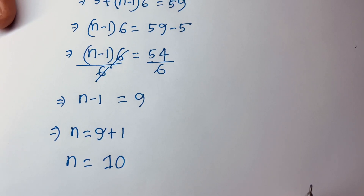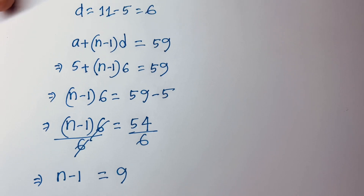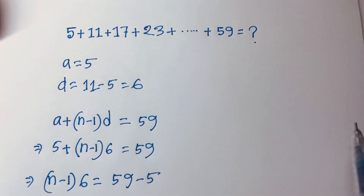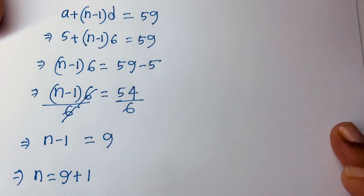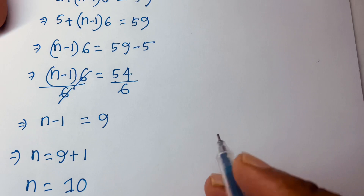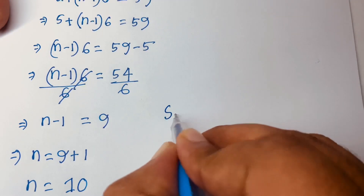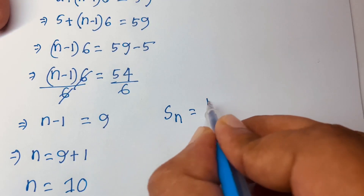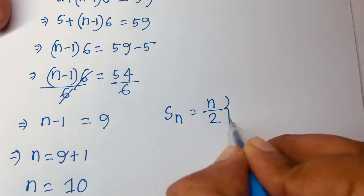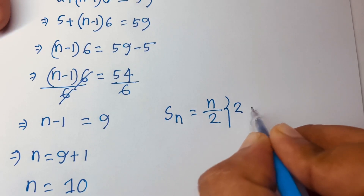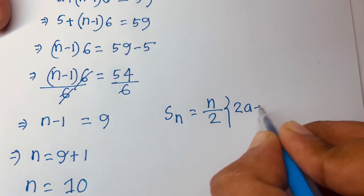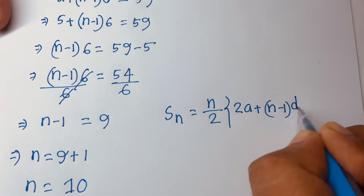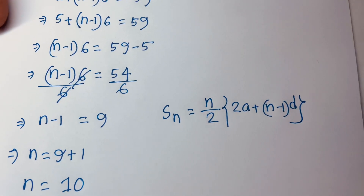Now we find the sum of all the numbers. According to the formula, S is equal to n over 2 times (2a plus (n minus 1) times d).